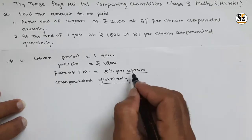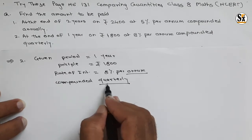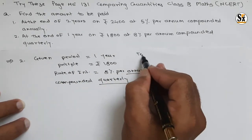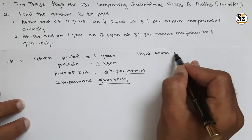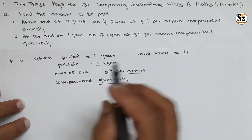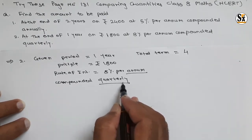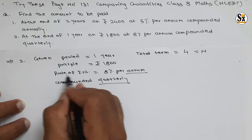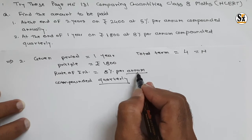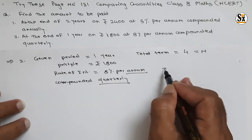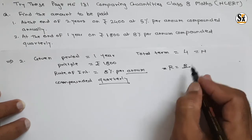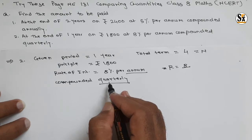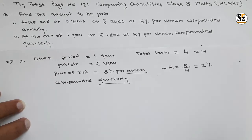Since it is compounded quarterly, there will be four terms in one year. Quarterly means three months per term, so there are four quarters in one year. Therefore n = 4. Rate of interest is eight percent per annum; for quarterly it will be 8 divided by 4, because there are four quarters, so rate of interest per quarter is two percent.